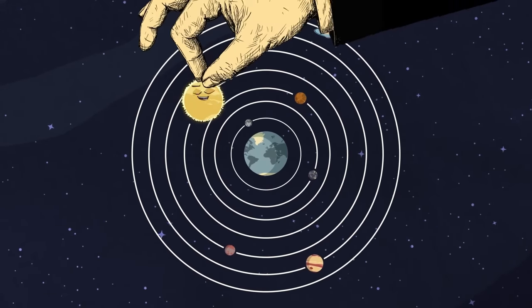Copernicus introduced a new and at the time crazy theory, placing the sun at the center of the solar system. This new theory was called the heliocentric model. In the 17th century his idea took hold when evidence was compiled by astronomers Tycho Brahe, Johannes Kepler, and Galileo Galilei.